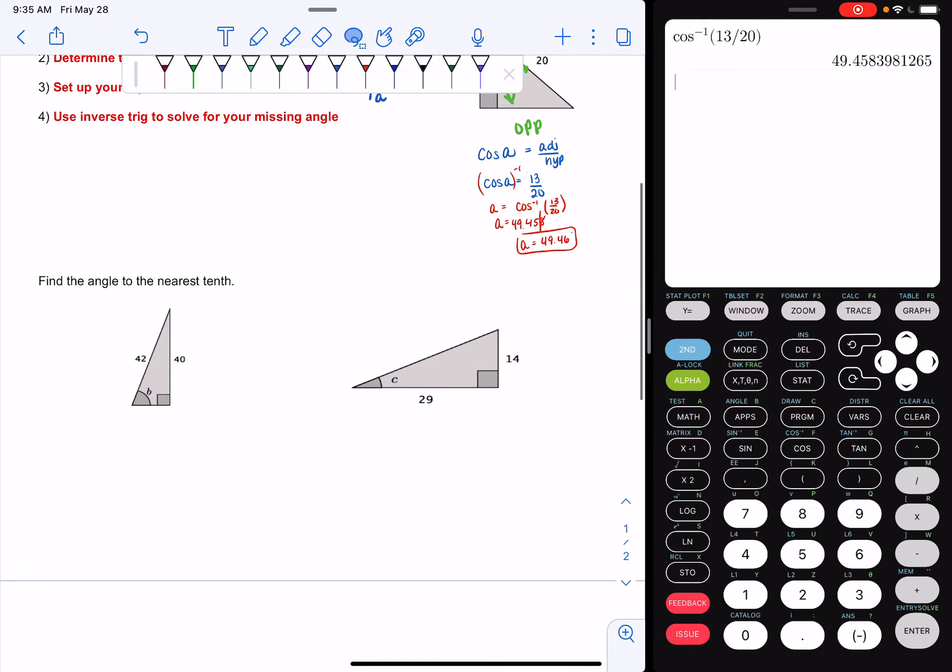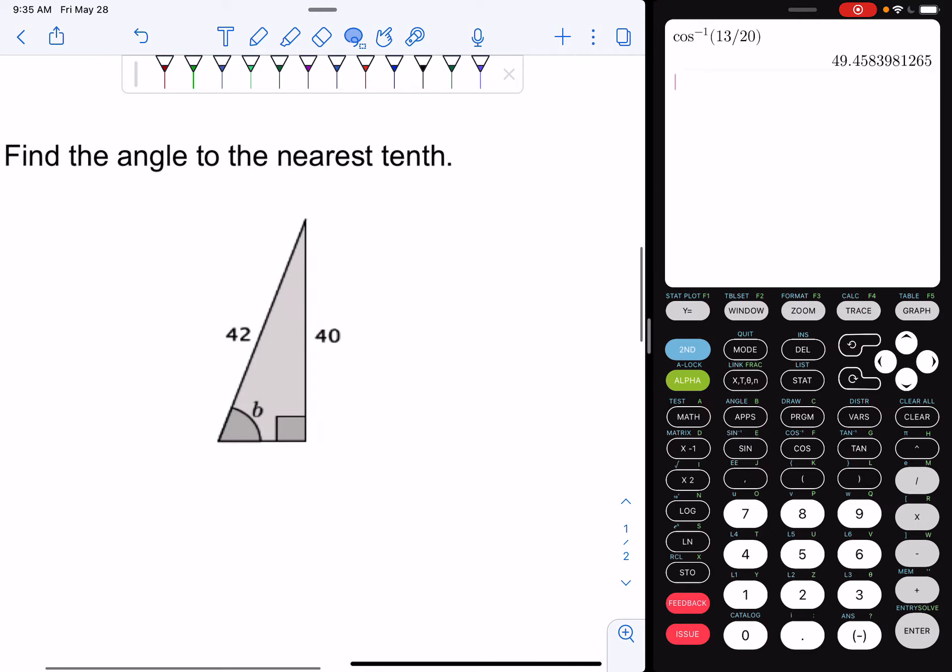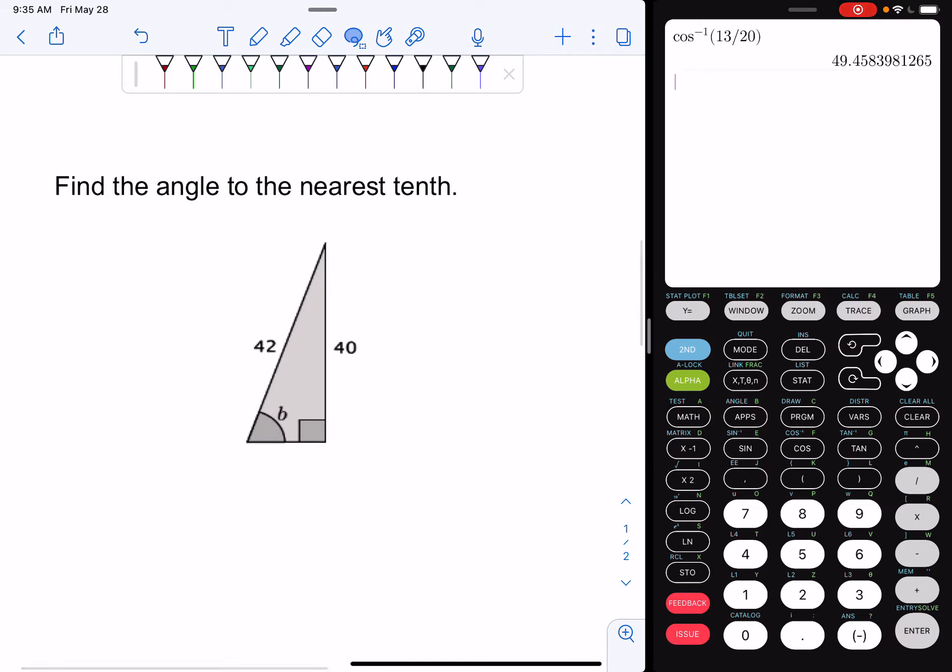Now find the angles to the nearest tenth. So if we look down here, I want to find the measure of angle B. Remember, the first thing we do is we label our sides. So 42 is my hypotenuse. 40 is my opposite. And last but not least, I have my adjacent. Now I need to figure out which part of SOHCAHTOA am I dealing with. If you look, I have information about my hypotenuse and my opposite. So I'm dealing with sine.